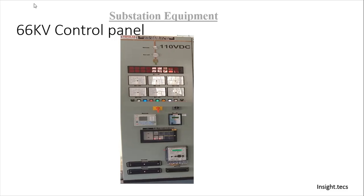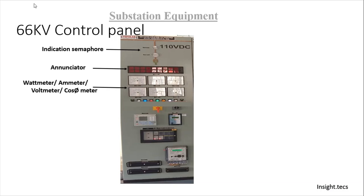This is a simple 66 kV control panel. These are the indication semaphores which indicate whether the isolator is closed or open right now. The annunciator indicates what type of relay has operated and what kind of fault is occurring on the line or on the equipment. Next, there are various indicators showing watts, ampere, and volts of the line or the equipment.